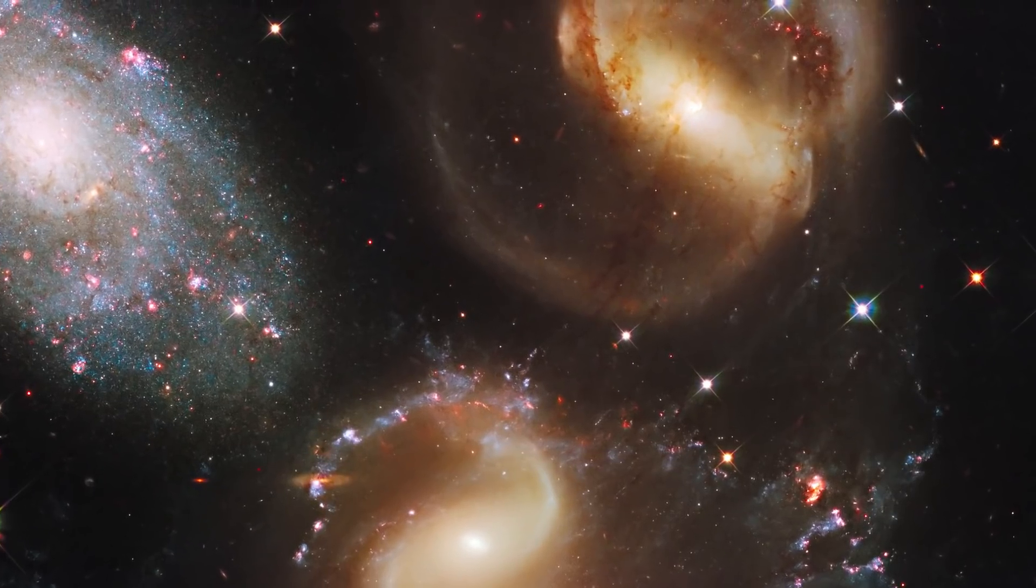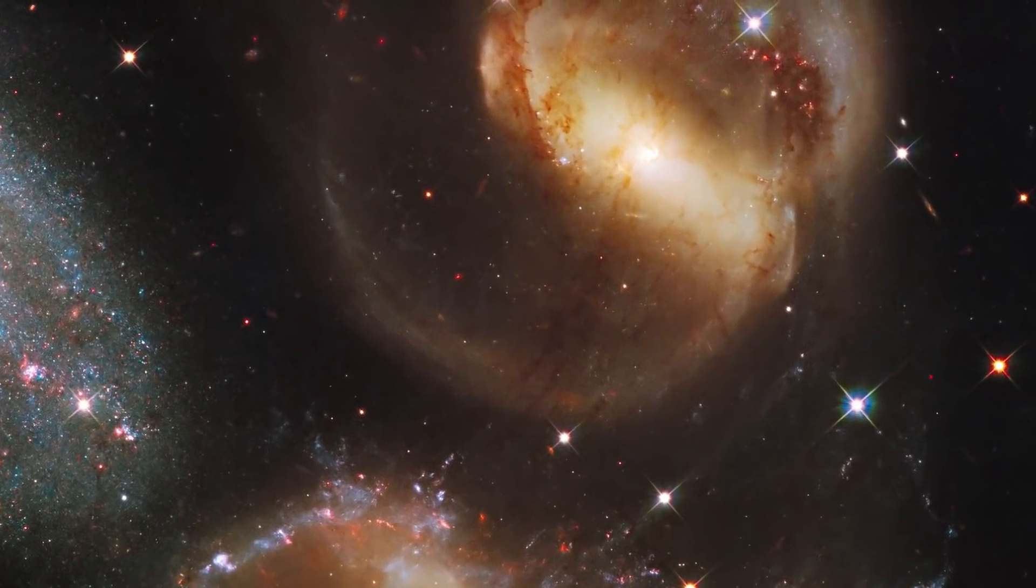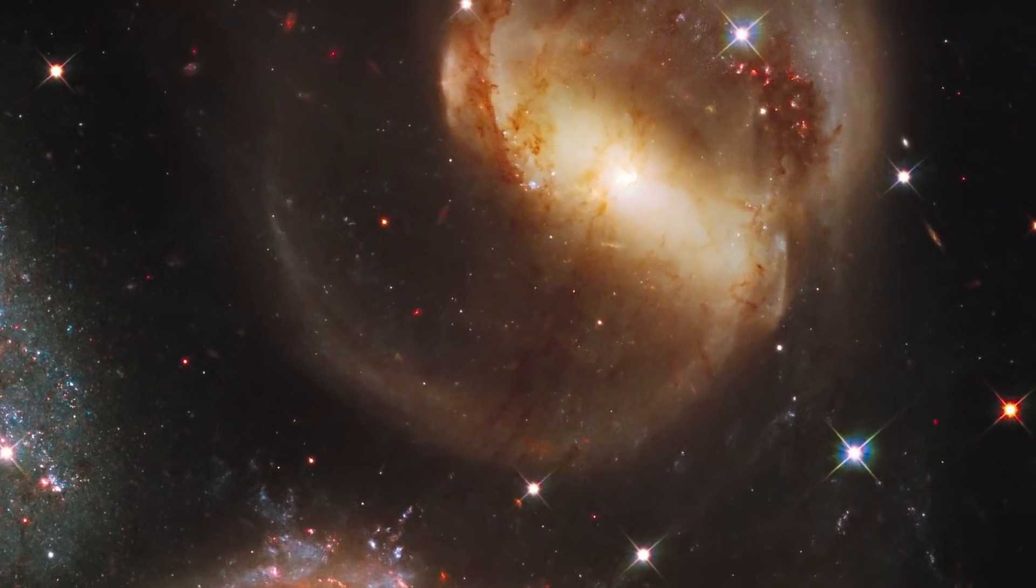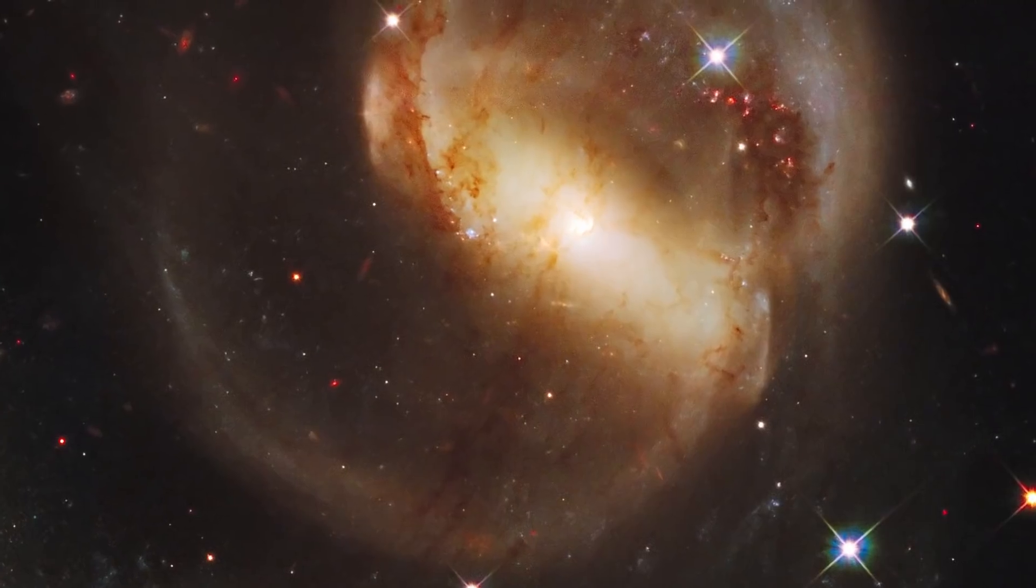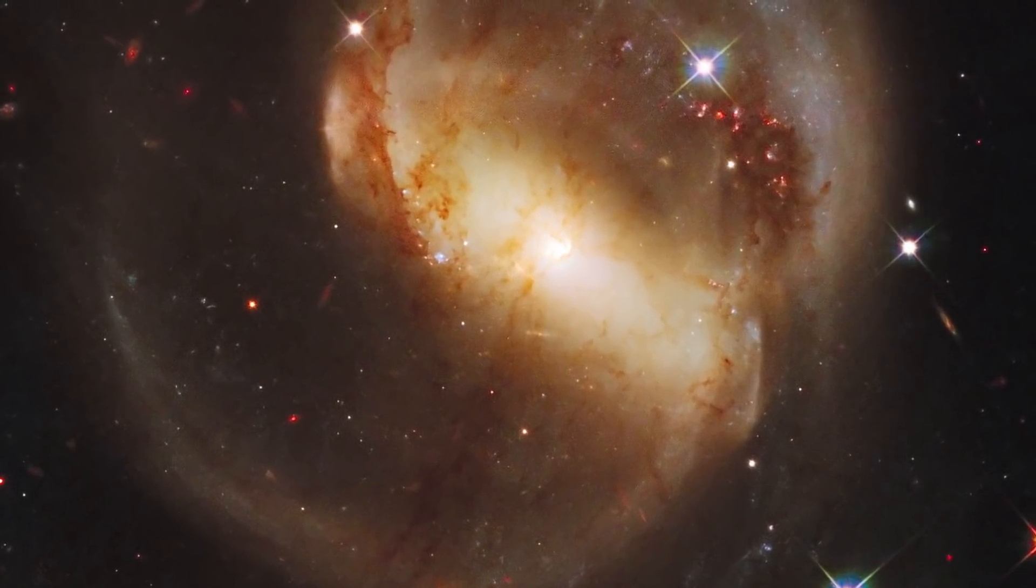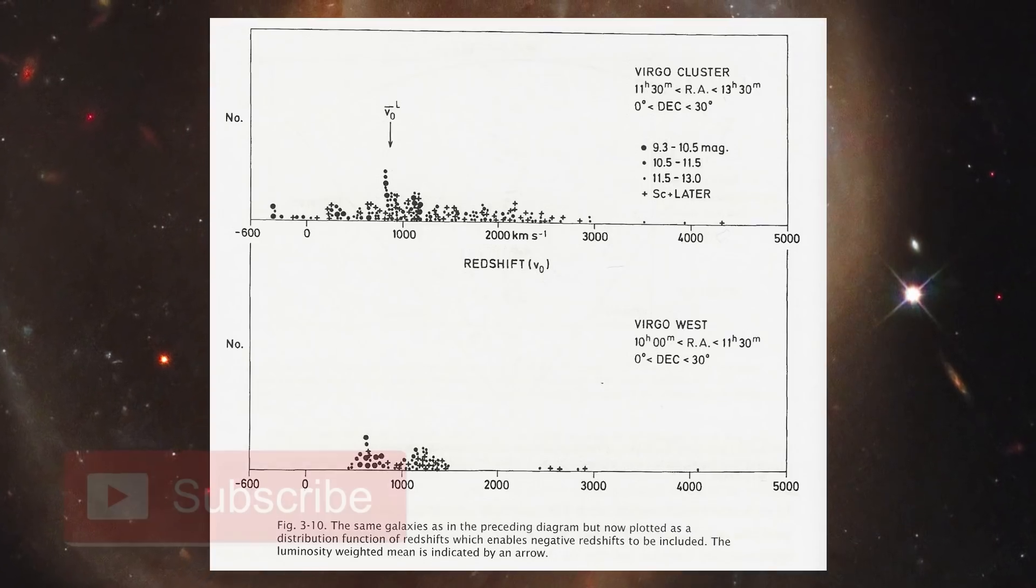Quasars and BL Lac objects may well be the initial formation of a galaxy which then slowly evolve into what we see as companion galaxies. The redshift slowly decreasing. Objects that are more mature than us will therefore appear as a negative redshift. In other words blue shifted.